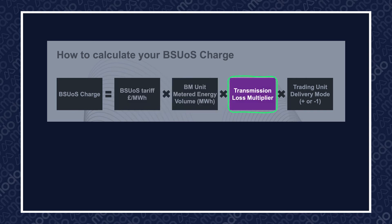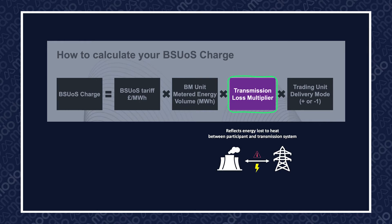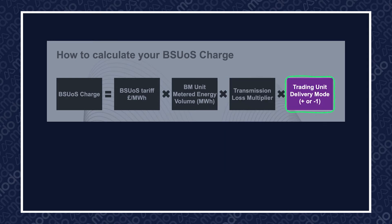The Transmission Loss Multiplier reflects the amount of energy lost to heat between the participant and the transmission system. The Trading Unit Delivery Mode, listed here as plus one or negative one, simply refers to whether a participant is importing or exporting.